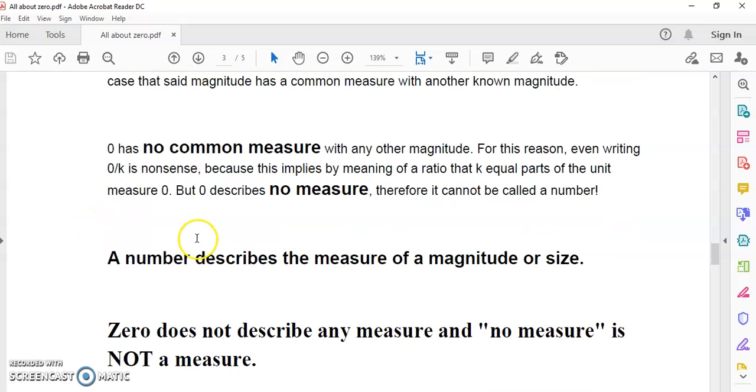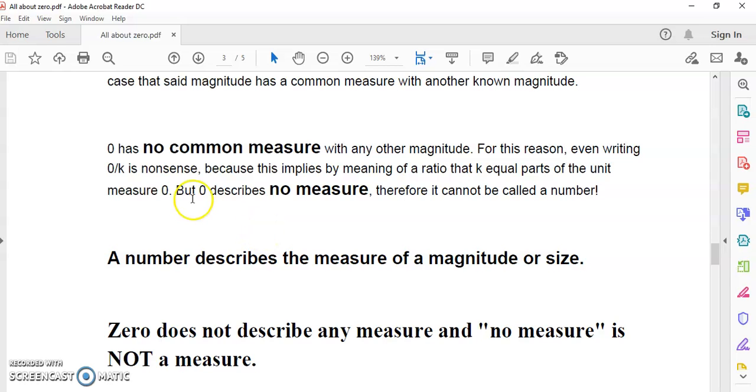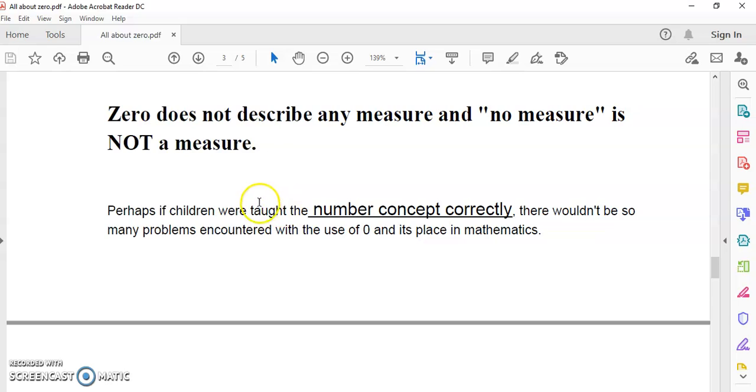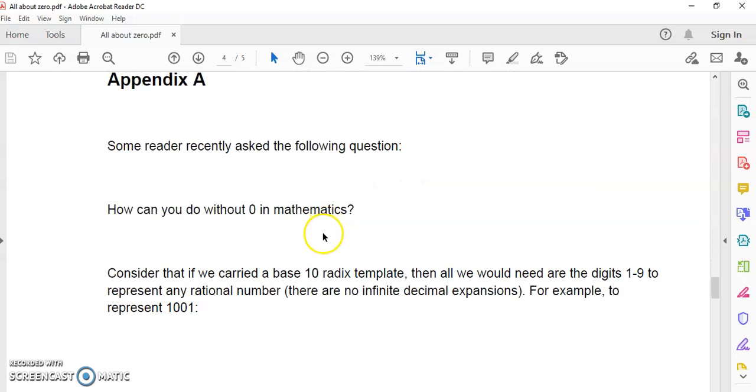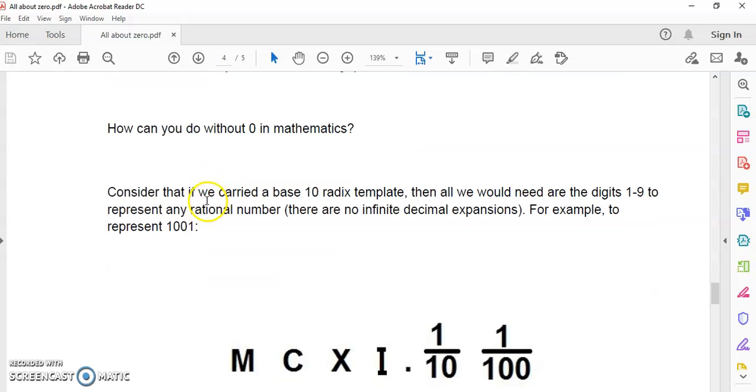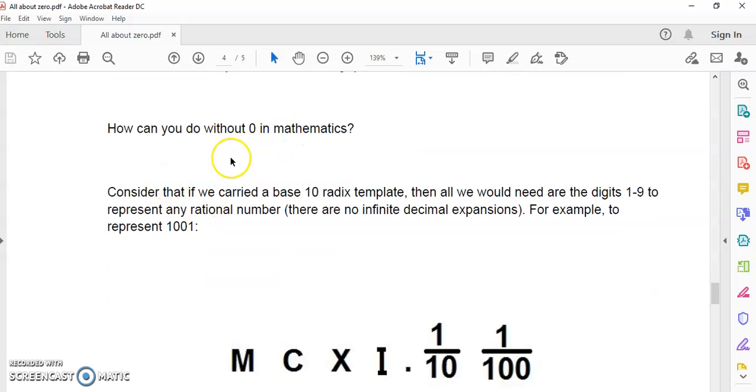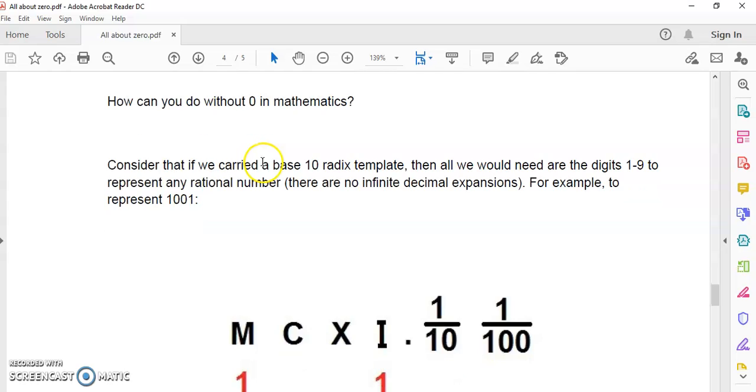And since all other arithmetic operations are derived from the basic four, it's true that zero means no number or no measure or simply no operation in all cases. So zero's main purpose in mathematics is to help in communicating number and functioning as a multipurpose placeholder in radix systems and equations. So it has been granted number status, but it's not at all required in mathematics, even though it's extremely useful and it has a privileged number status. So zero has no common measure with any other magnitude. For this reason, even writing zero over k is nonsense because this implies by meaning of a ratio that k equal parts of the unit measure zero, but zero describes no measure. Therefore, it cannot be called a number.